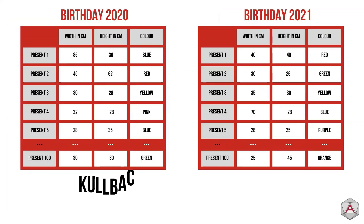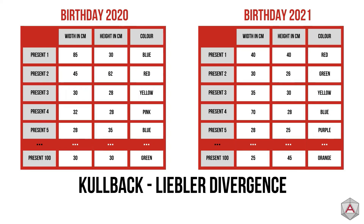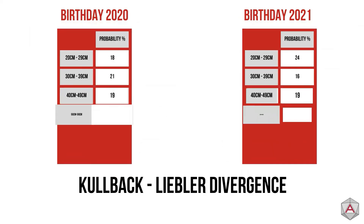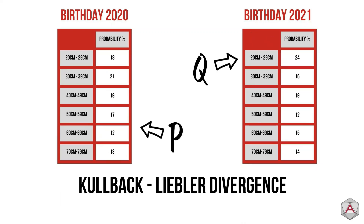Now we want to compare how different your presents from this year were to last year. First we pick a column to examine — in this example we will pick height — and we'll turn these columns into probability distributions. This means we should calculate the likelihood of a value in the dataset falling between particular ranges. These ranges should be the same between the 2020 and the 2021 datasets. From now on, we can refer to the 2020 height probabilities dataset as P, and 2021 as Q.